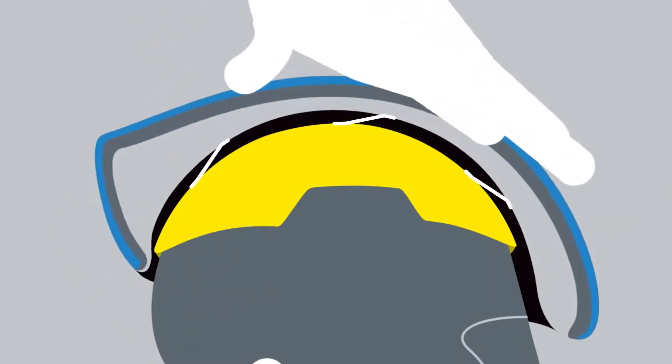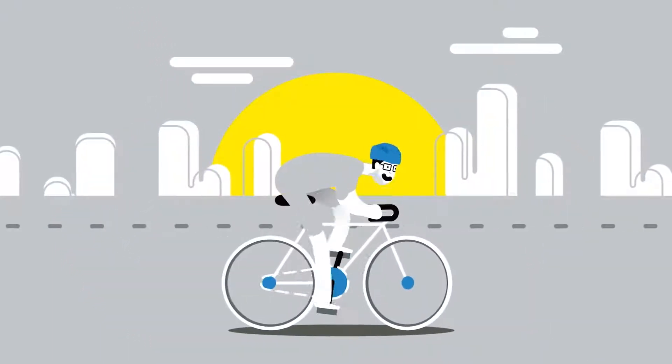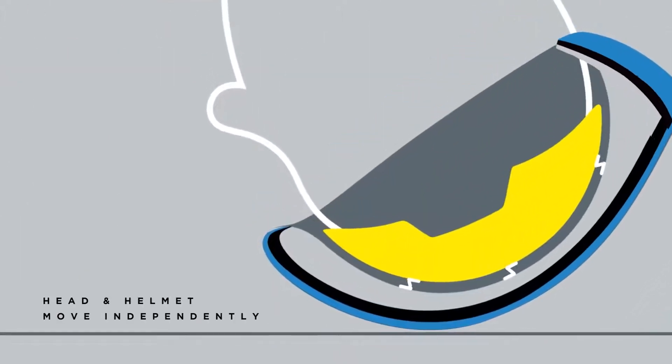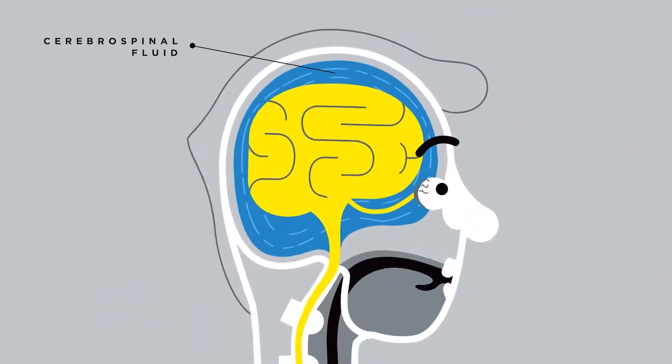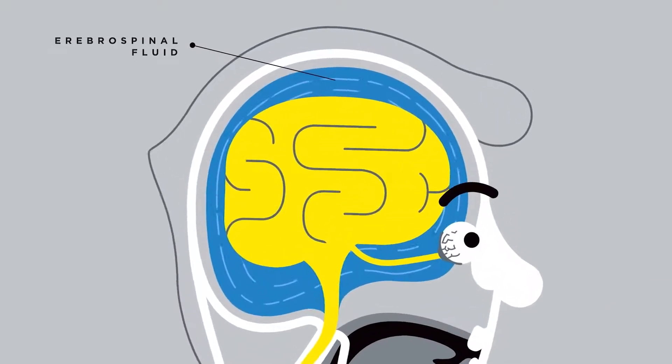MIPS is designed to mimic the human body's natural protective structure by allowing the head and helmet to move independently from each other. This is similar to the way the body's own cerebrospinal fluid allows the brain to move independently from the skull.